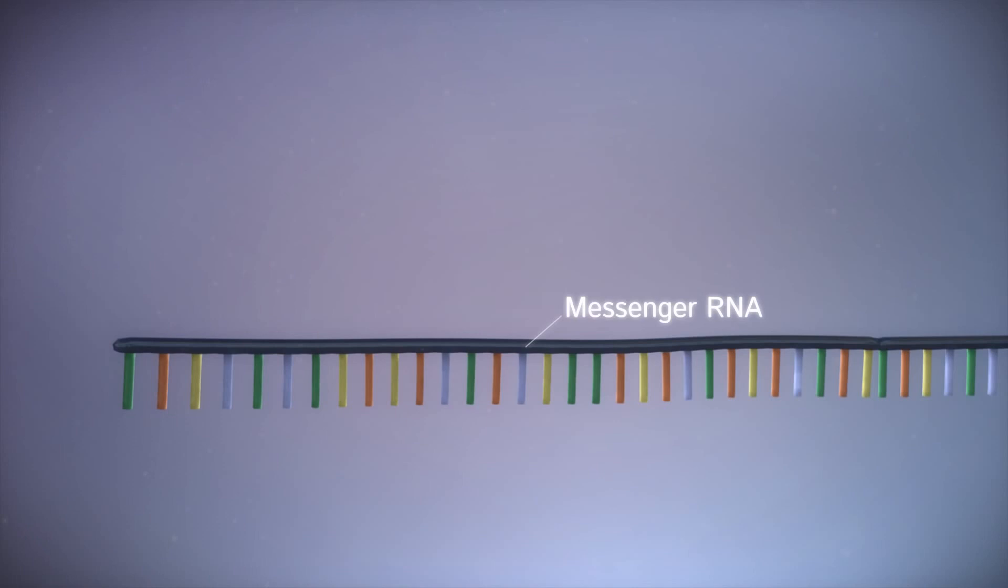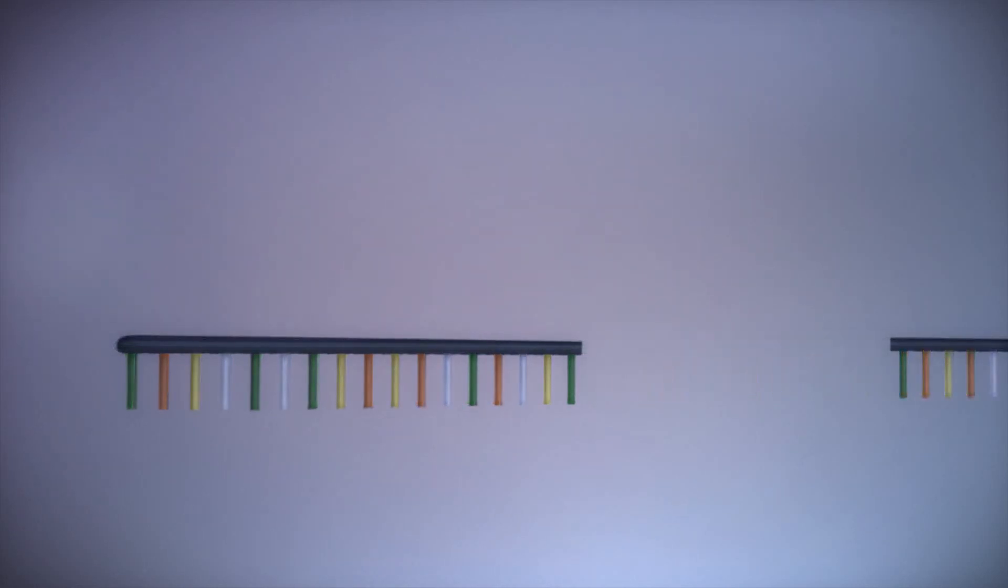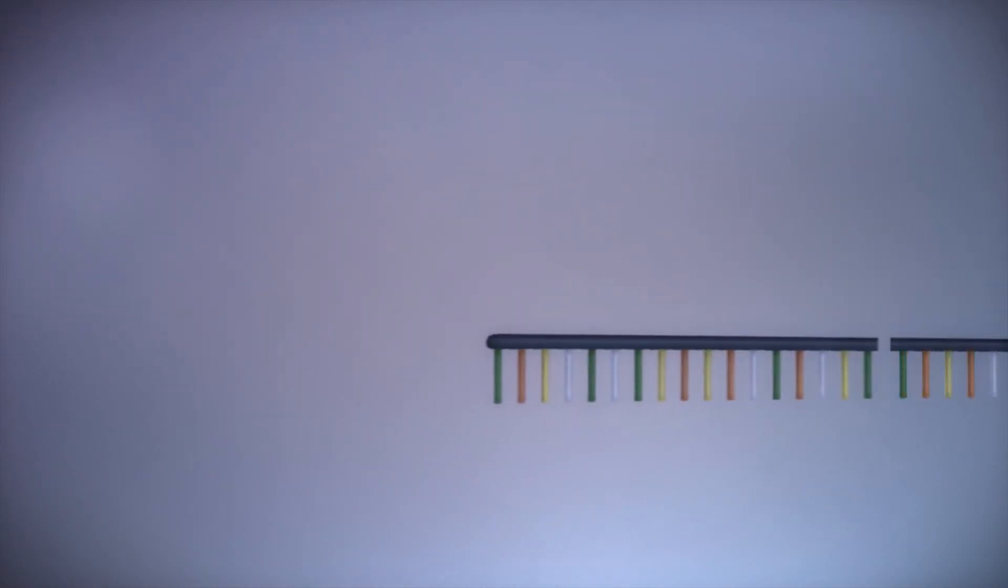Before the messenger RNA can be used as a template for the production of proteins, it needs to be processed. This involves removing and adding sections of RNA.